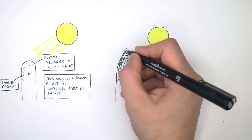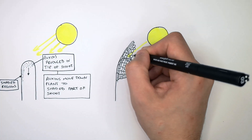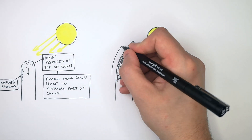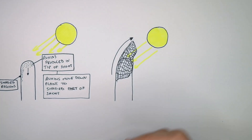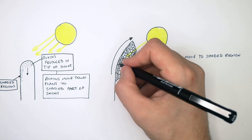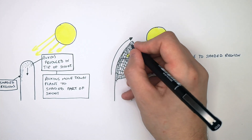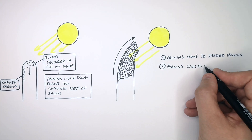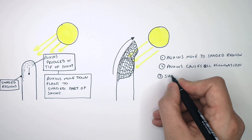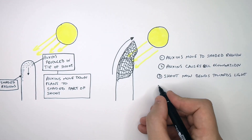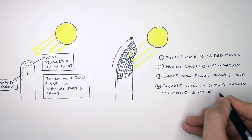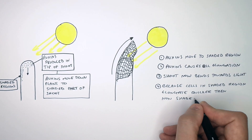The faster that one side of the shoot grows will mean that the shoot is going to bend more towards the light. In summary: auxins move to the shaded region of the shoot; auxins cause cell elongation to happen more quickly; the shoot now bends towards the light because cells in the shaded region elongate quicker than the non-shaded region.